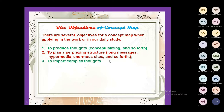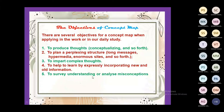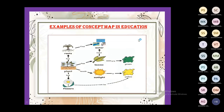The third objective is to impart complex thoughts — important points can be easily correlated with the help of a concept map. The fourth is to help learn by explicitly incorporating new and old information — it is a connecting link between old and new information. The fifth, and very important, is to survey understanding or analyze misconceptions. The sixth is to characterize processes and flows.